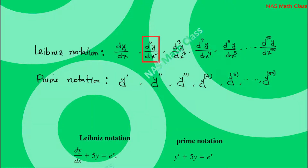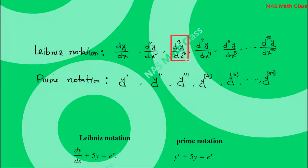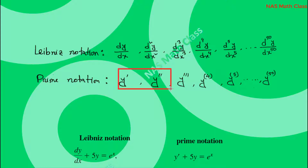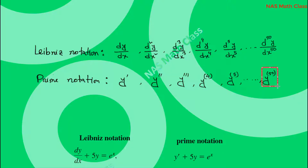So d²y/dx² means y is differentiated with respect to x twice, and y double prime means the same thing. Similarly, d³y/dx³ means y differentiated three times, and y triple prime means y differentiated three times. For prime notation, we use up to triple prime: y prime, y double prime, y triple prime. Beyond three, if y is differentiated 4 times, we write y with superscript (4) in brackets; for 5 times, y with superscript (5) in brackets, and so on.